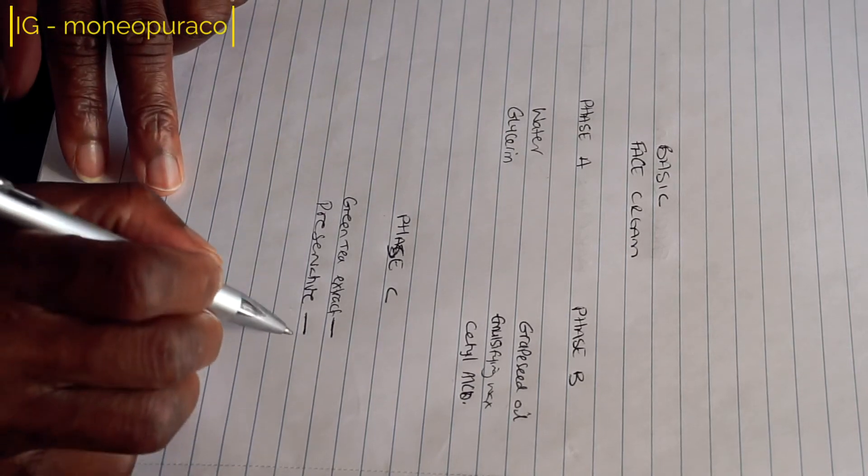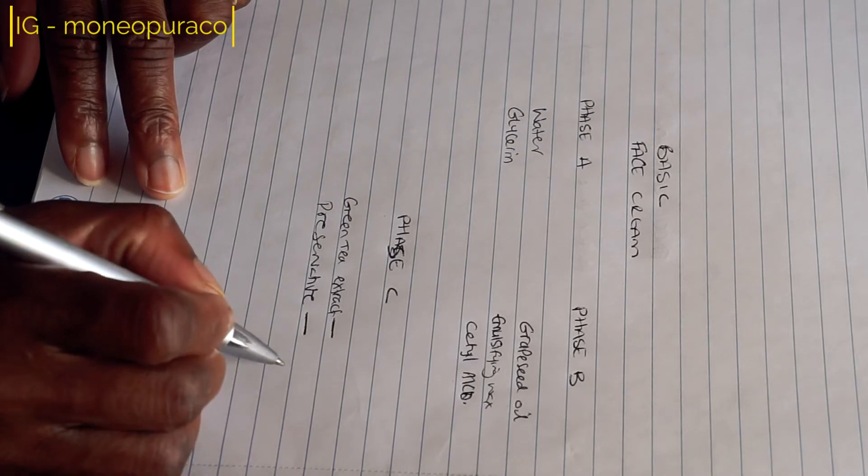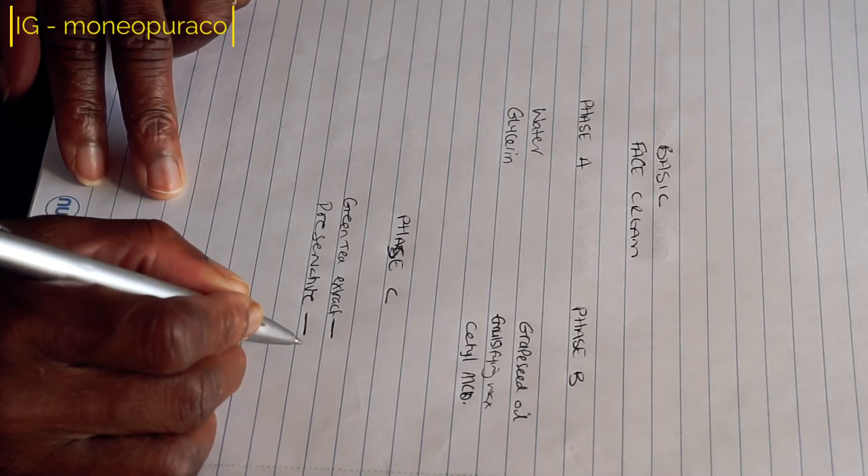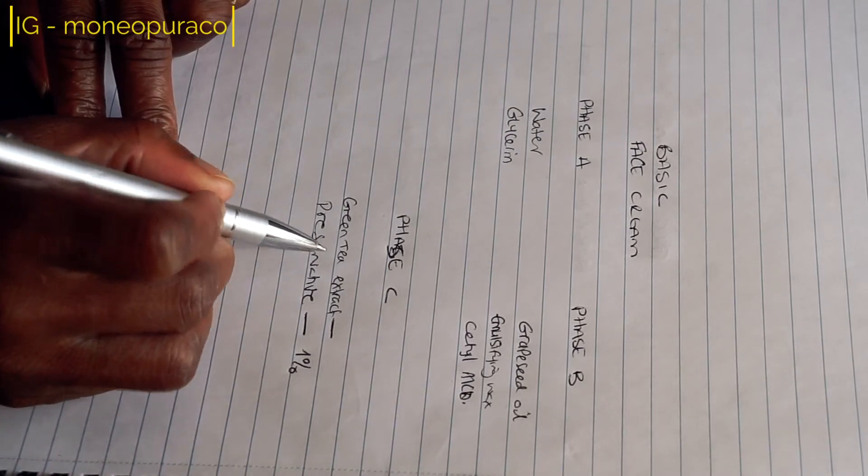For the preservative, the recommended usage range for the preservative I'm going to be using is 1%, and for the green tea extract we're also going to be using 1%.